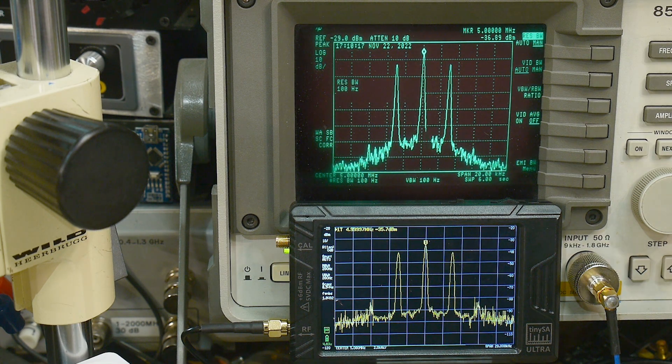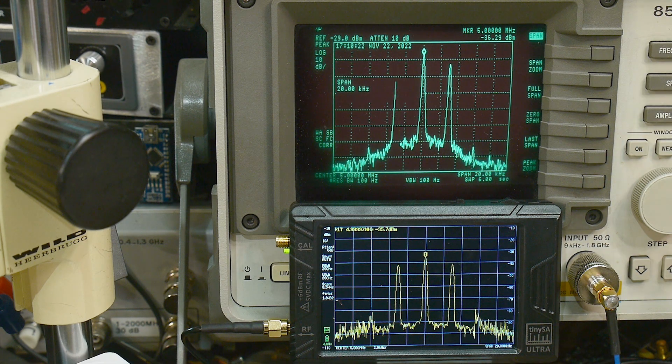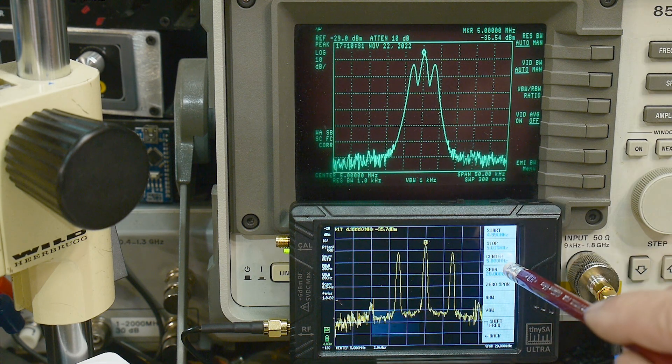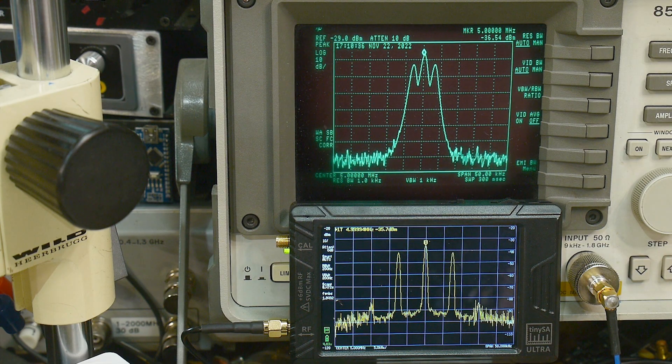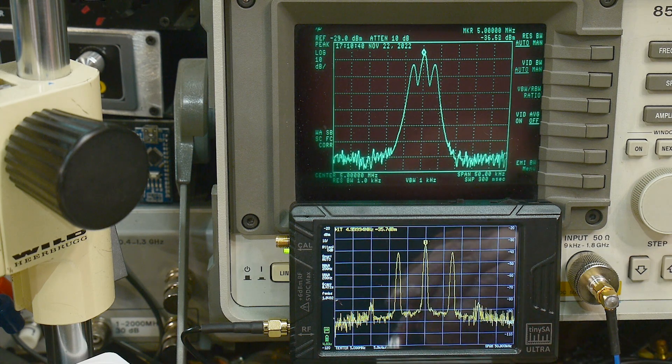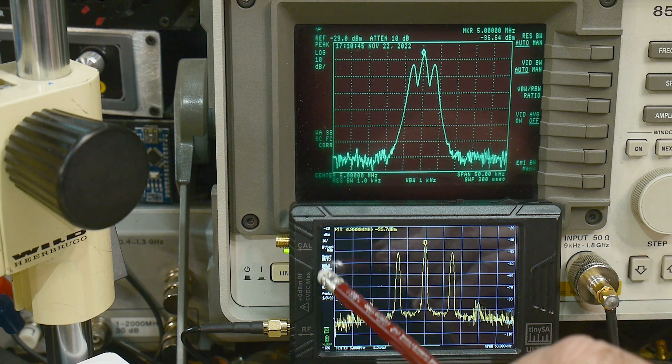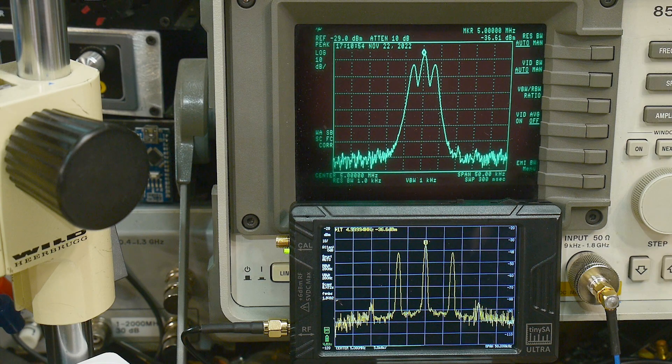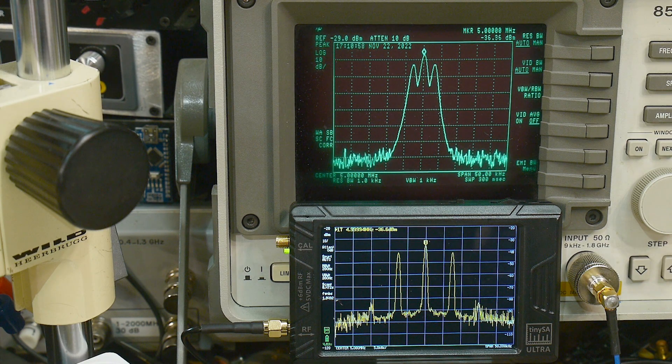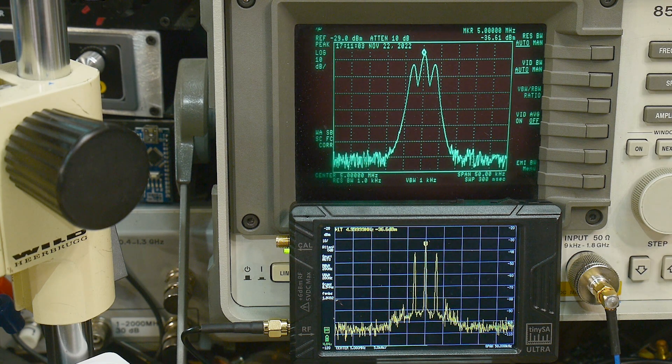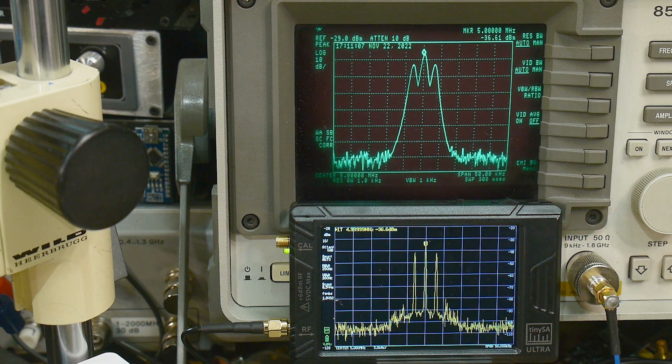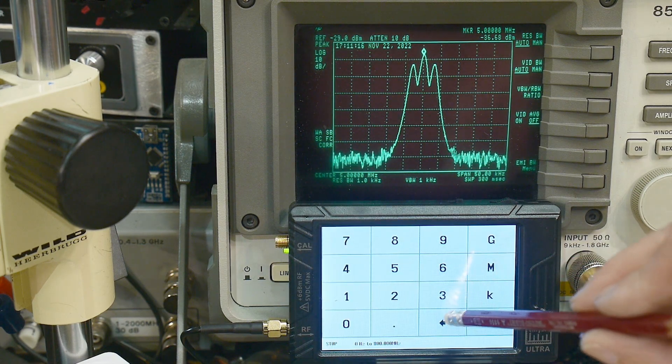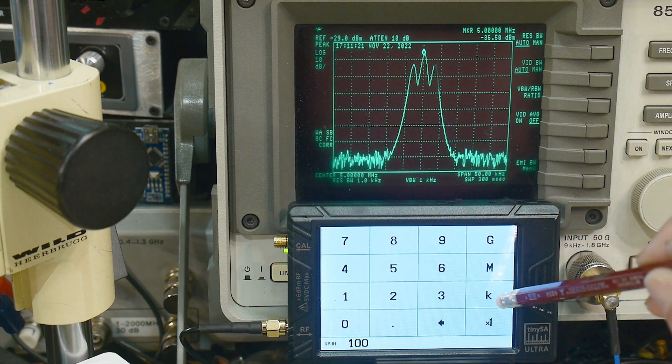Let's do a span of 50 kilohertz and put our bandwidth back to auto. How come it's not running? How come it's still slow? My resolution bandwidth got set to manual - no, it's on auto. Maybe it just needs to do one sweep before it catches itself back up again.